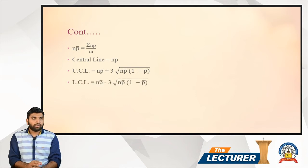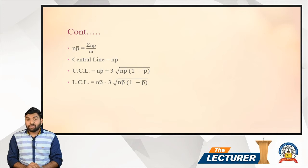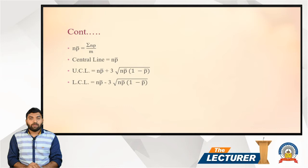The lower control line (LCL) is equal to np̄ minus 3 times the square root of np̄ into bracket (1 minus p̄).